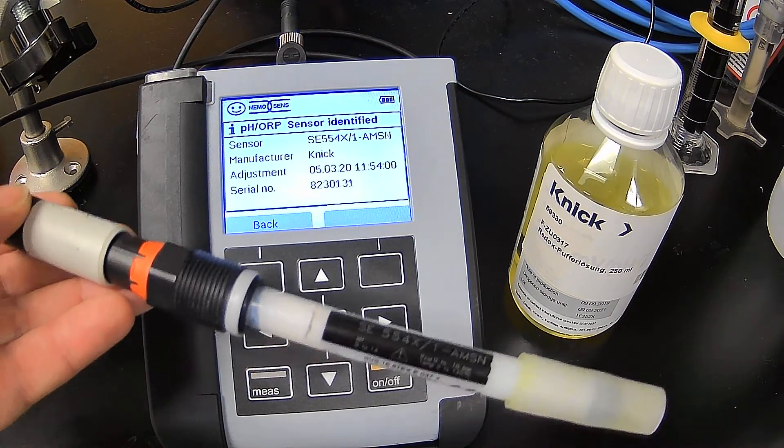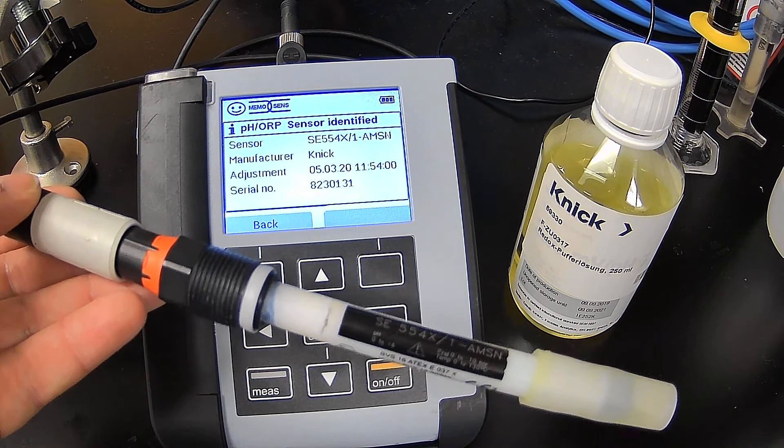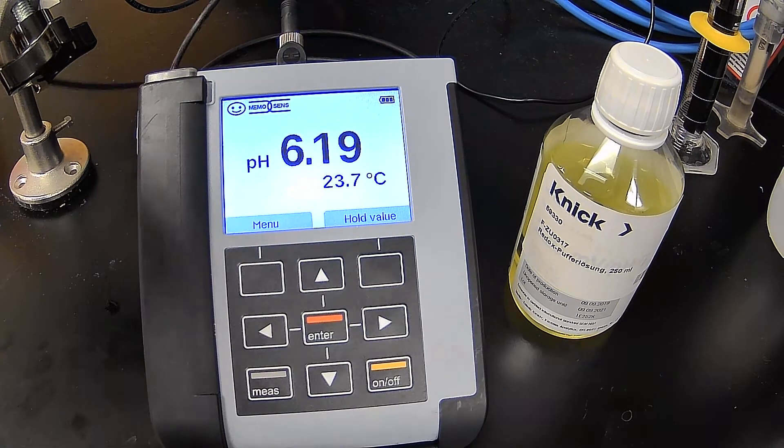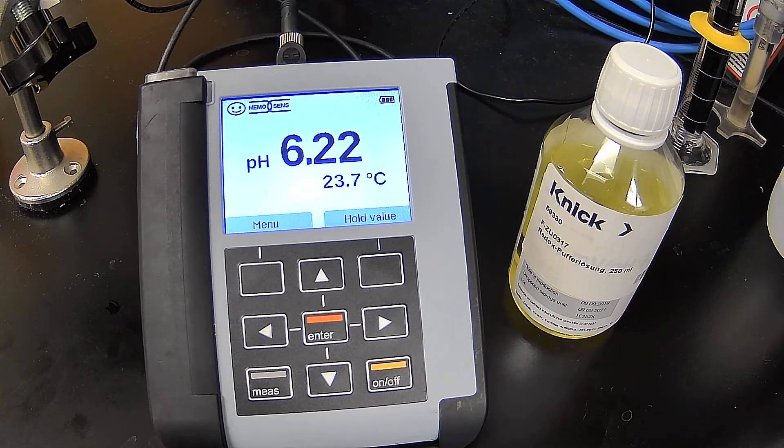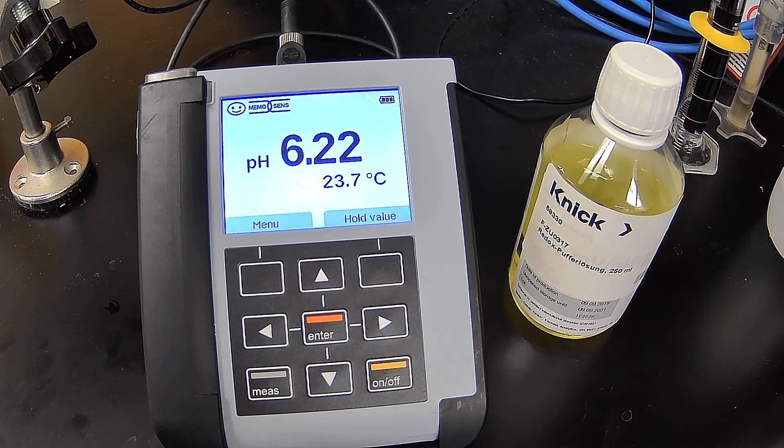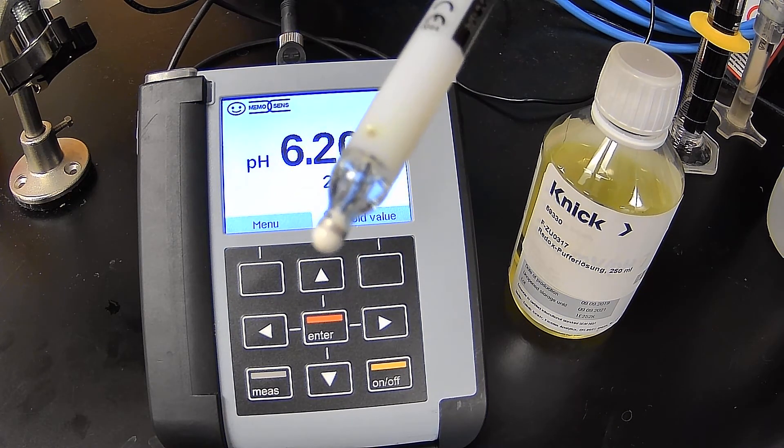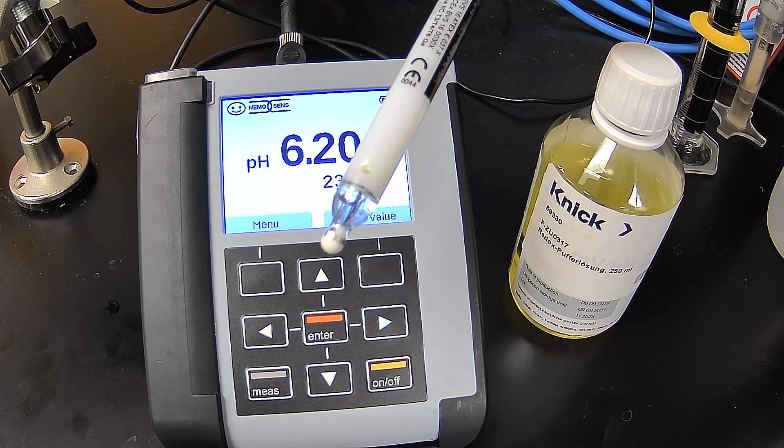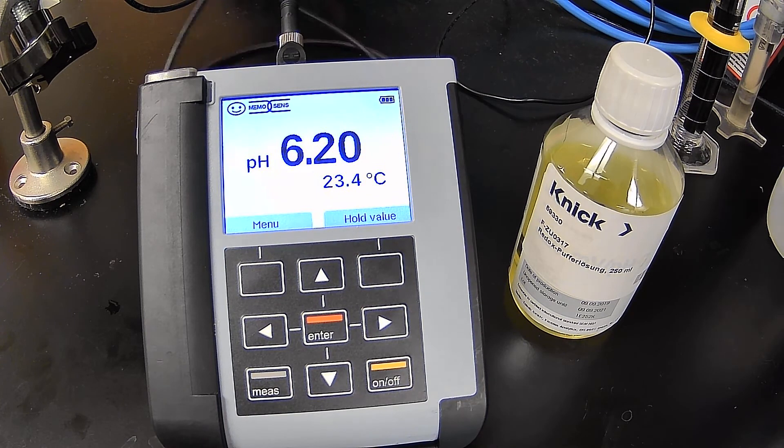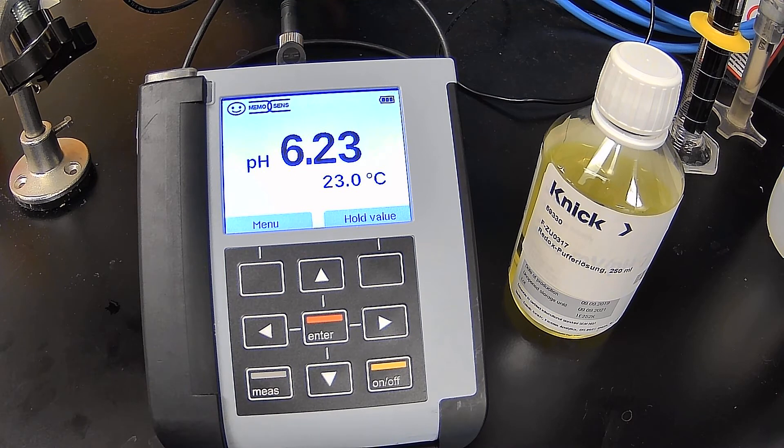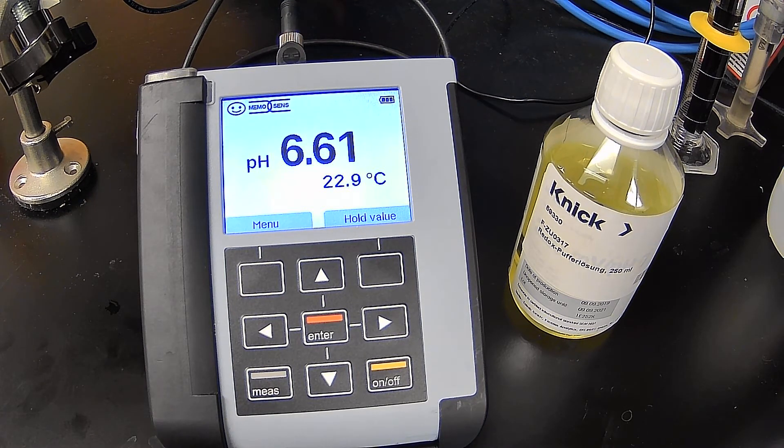So when you make that connection, you get the serial number, you get the last calibration, manufacturer, all that good information. So I'm going to remove the wetting cap that's on there, and because this is a combo probe, it does ORP and pH at the same time. I'm going to put it into the buffer here, or the calibration solution.